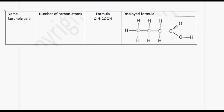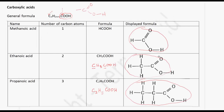The next member is butanoic acid, which has four carbon atoms. Therefore N is 3, so it will be C3H7COOH — since 3×2+1 equals 7. You will notice that in all members of this homologous series, we have the COOH group present.